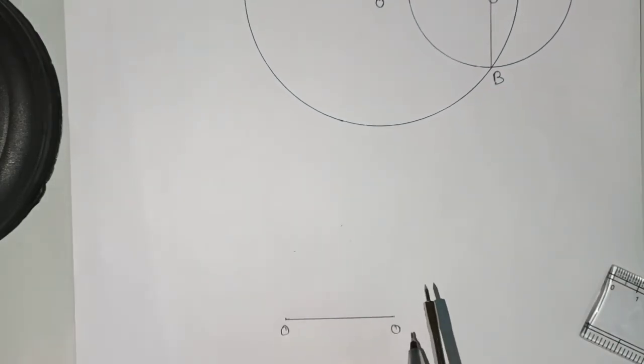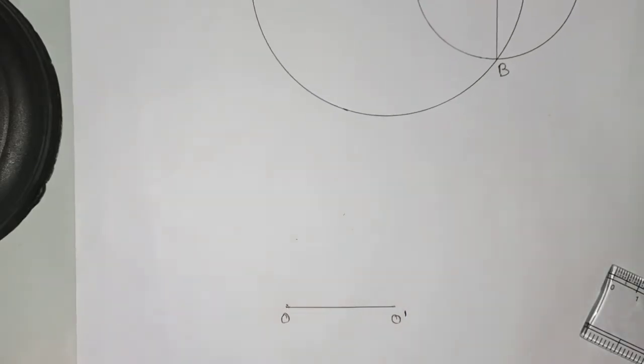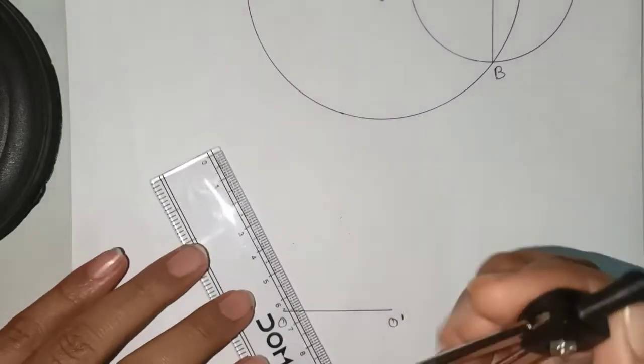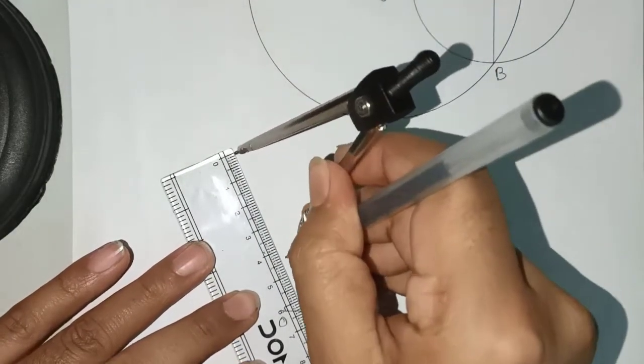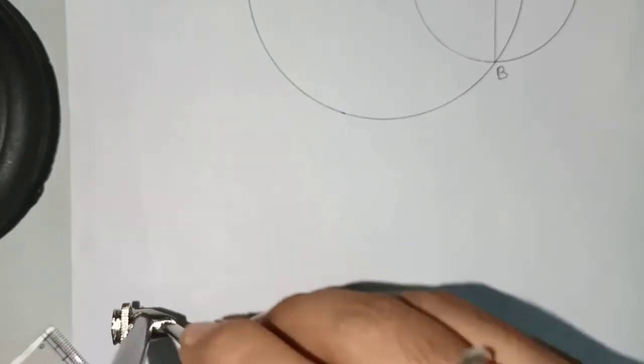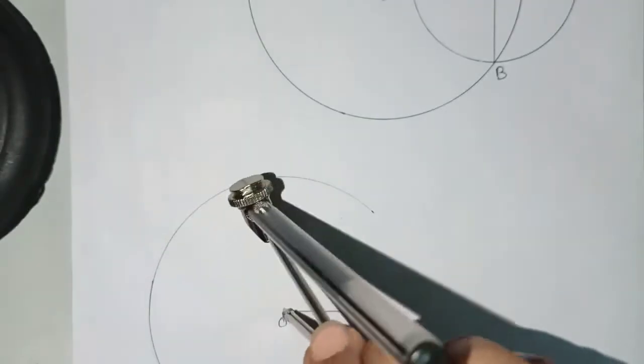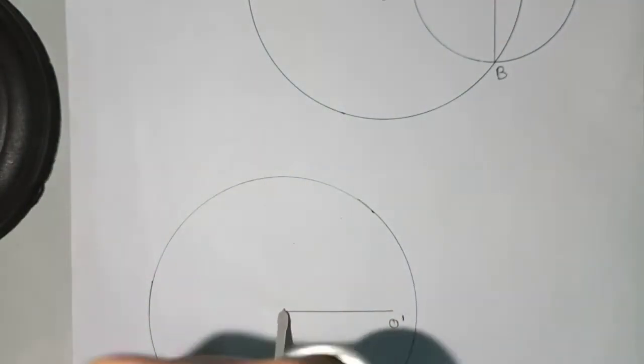Here one center will be your O and another center will be your O prime. Now from center O, take the radius 5 centimeters and draw a circle. So here we have a circle of 5 centimeter radius.